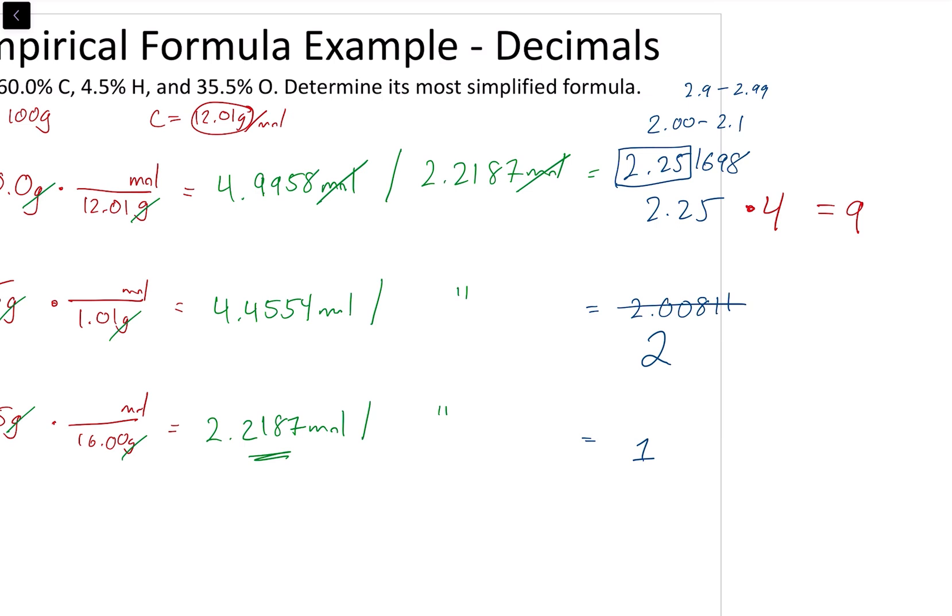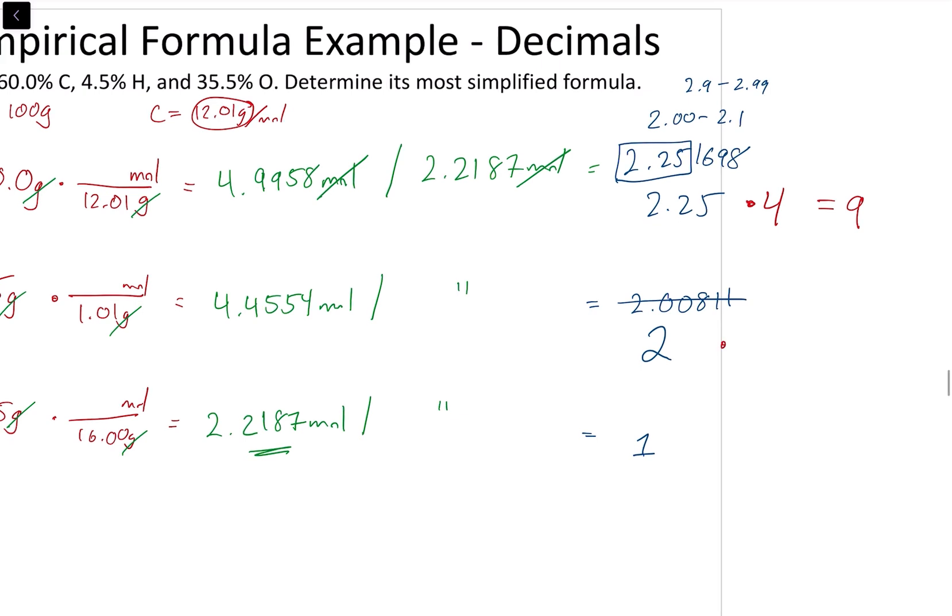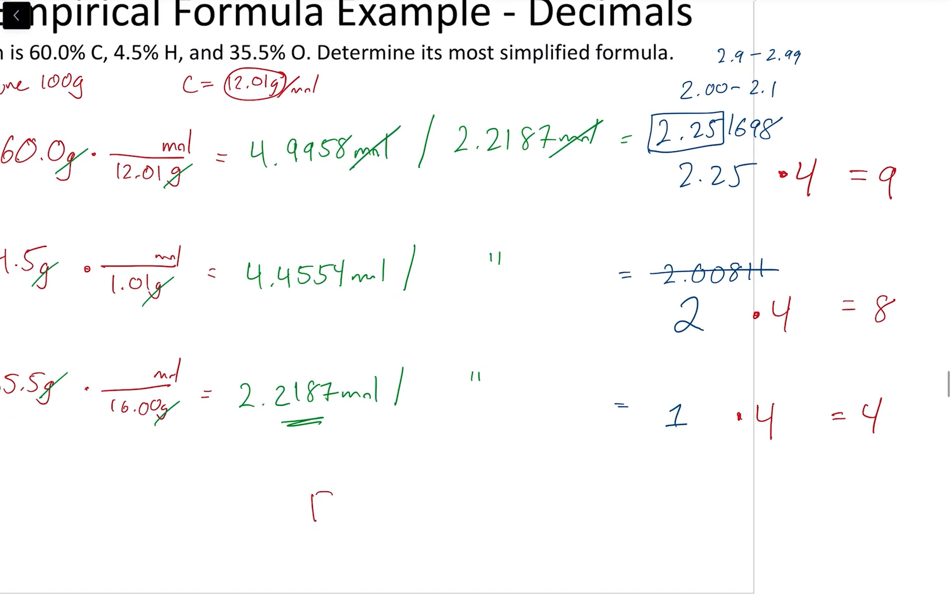Now, what we do to 1, remember that if we factor a number out, we got to bring it, when we factor it out, we factor it out of all the elements. And so, if we are now multiplying by a factor, we must multiply that factor to all the elements. So, I'm going to multiply this by 4, and I'm going to multiply this by 4. And so, here I'll have 8, and here I will have 4. So, congratulations, we just found our empirical formula where we have C9H8O4.